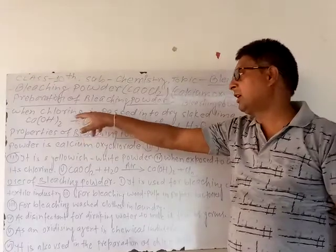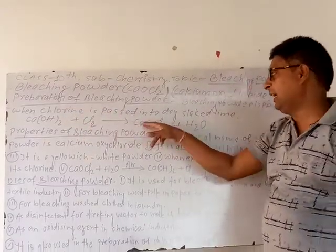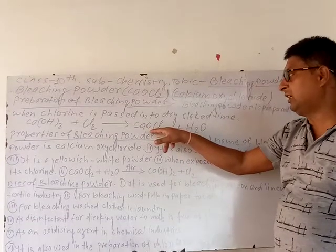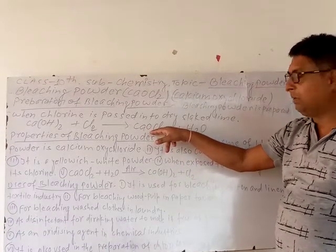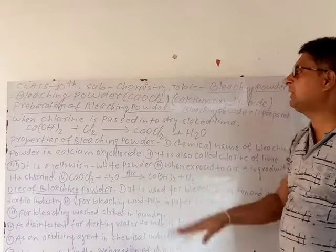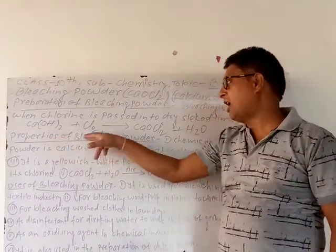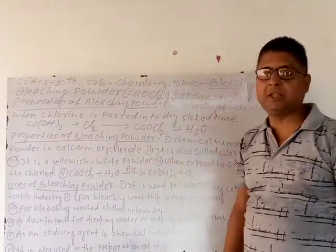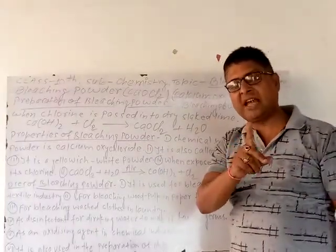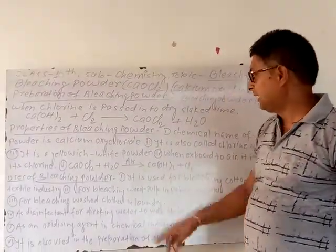When chlorine is passed over slaked lime, CaOCl2 — that is, Bleaching Powder — is formed, plus water is also produced. Now let us understand the properties of Bleaching Powder.